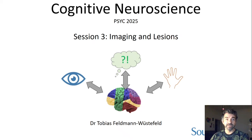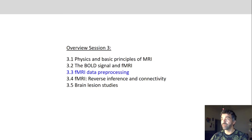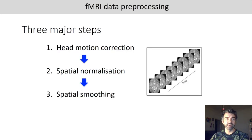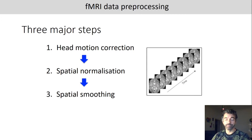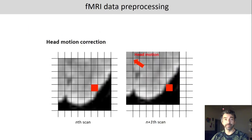This is the third part of today's session on imaging and lesions. After we've talked about the BOLD signal and fMRI, we will now go into more detail about fMRI and first look at data pre-processing — very important steps in the processing of MRI data. Once we've collected all the fMRI data, we need to do these three steps: head motion correction, spatial normalization, and spatial smoothing.